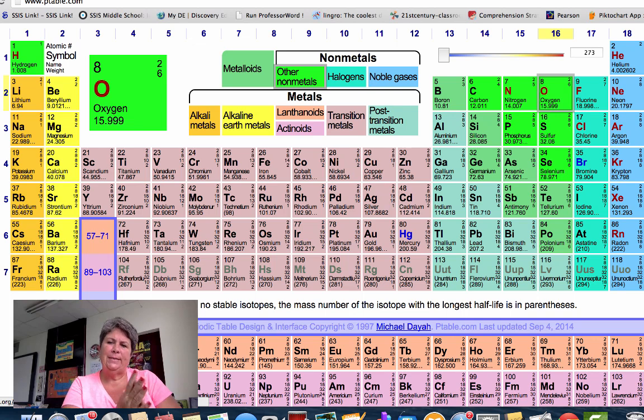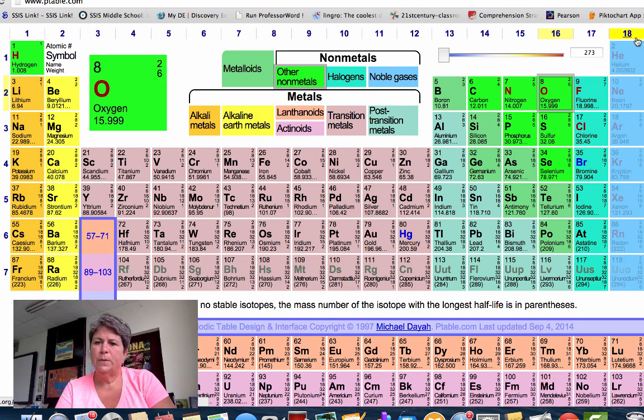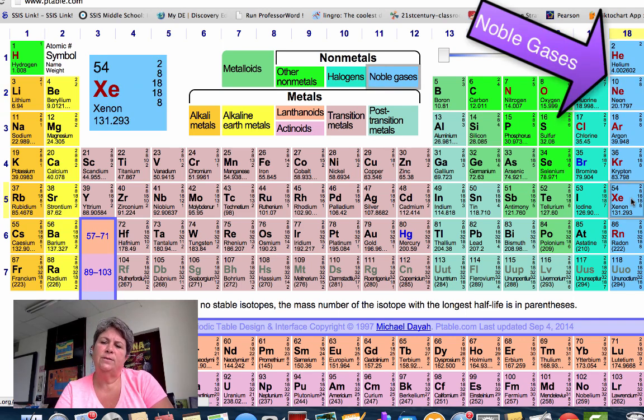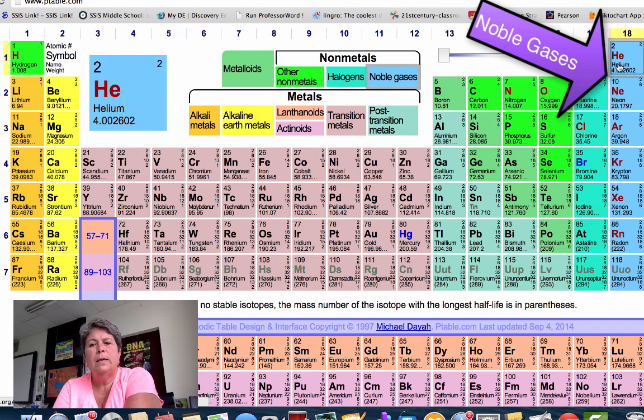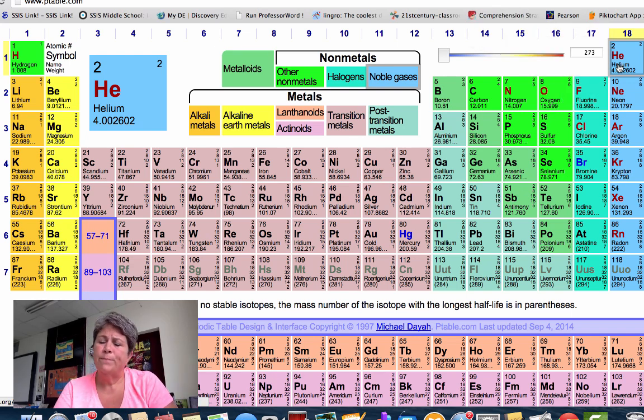Let's talk a little bit about group 18 because this will help you understand. The elements in group 18 are called the noble gases. That's just a name for this family. So you have helium, neon, argon, krypton, xenon, radon, and this one that they haven't even named yet—we won't worry about that one.